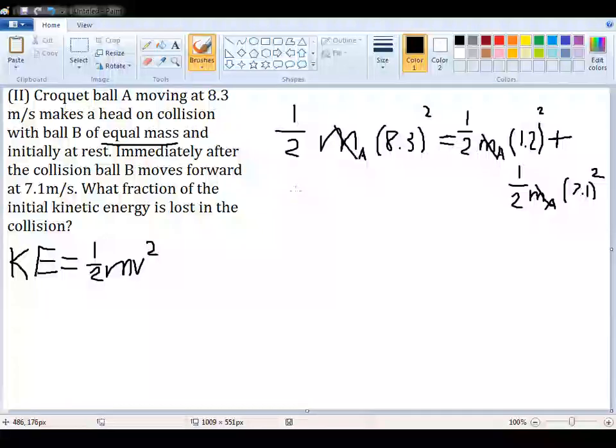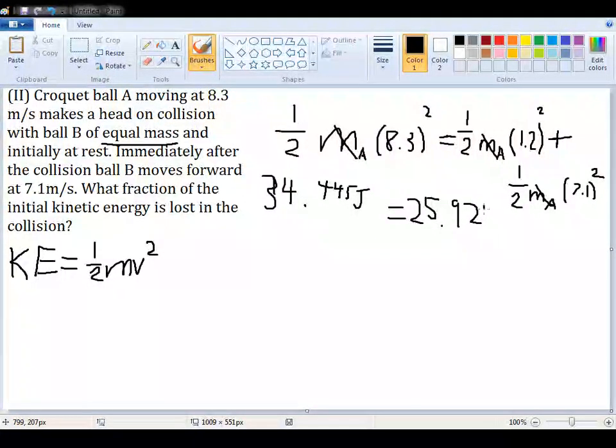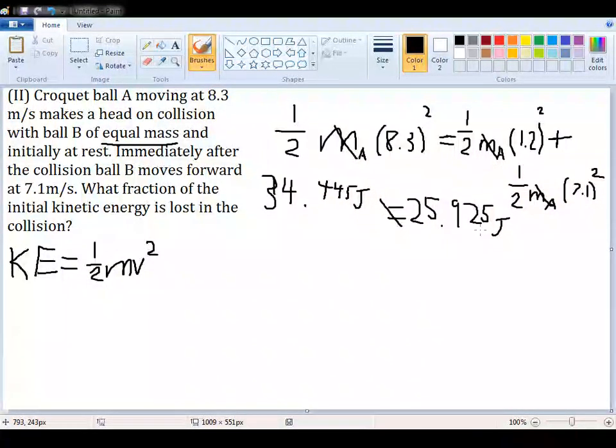So 1/2 of 8.3² is just going to be equal to 34.445 joules on that side. And on the right side here, we have the sum of 1/2 of 1.2² plus 1/2 of 7.1². And putting this into your calculator, the sum you'd get for that would be 25.925 joules. And obviously, these two numbers are not equal to one another, so we are losing some stuff here.